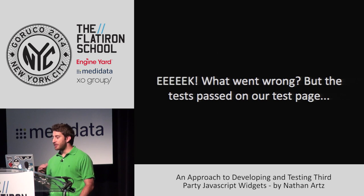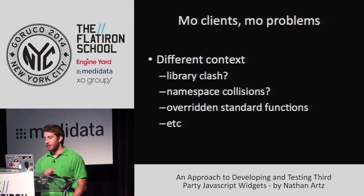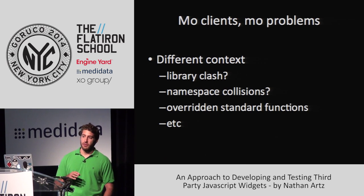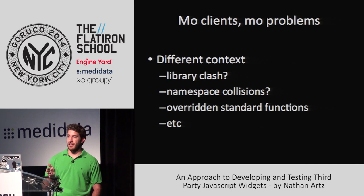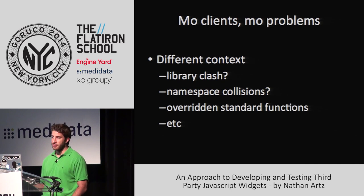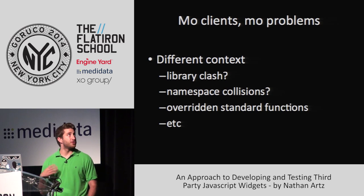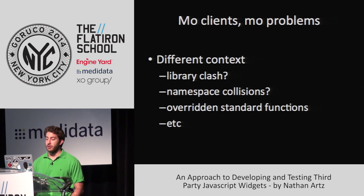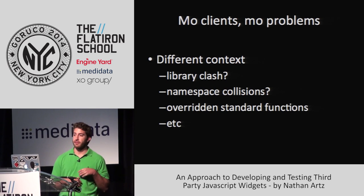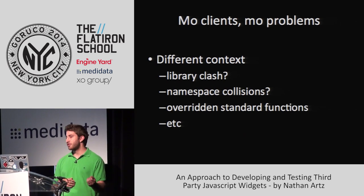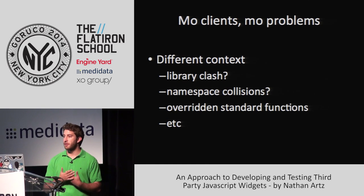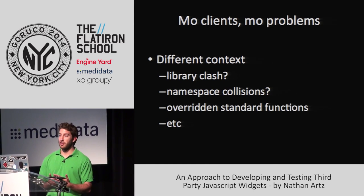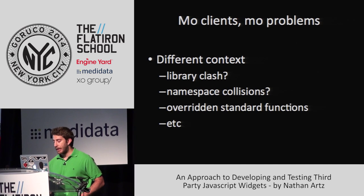When we set up our test page, everything was amazing. The biggest underlying issue is that with most testing, you don't have to test the environment — the environment's an assumption. But when you're dealing with third-party JavaScript, that's something you have to completely think about. You can have library clashes. If your JavaScript uses one version of jQuery and the client uses another version of jQuery on the same page, either they're going to break you or you're going to break them. There are tons of other crazy things to worry about.